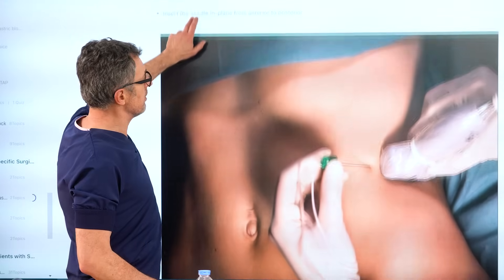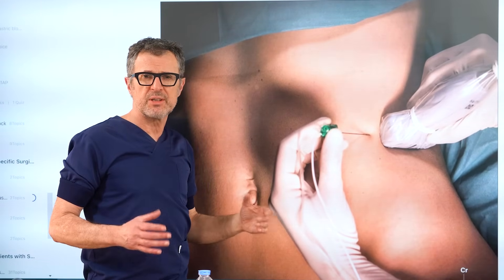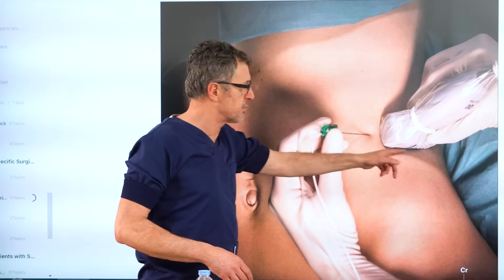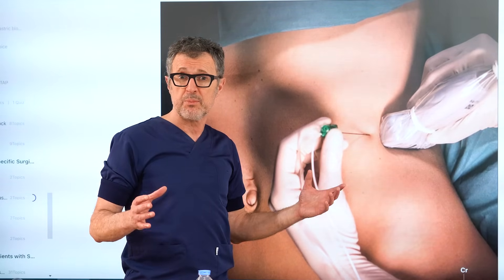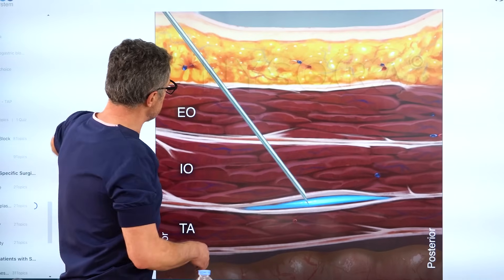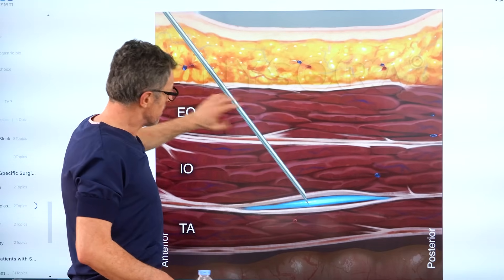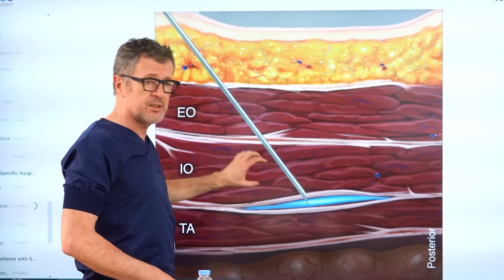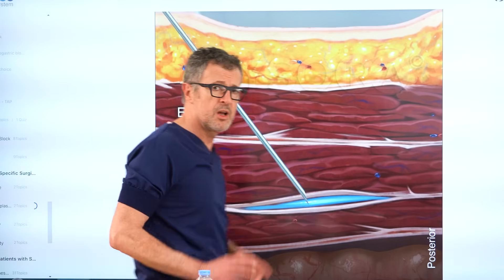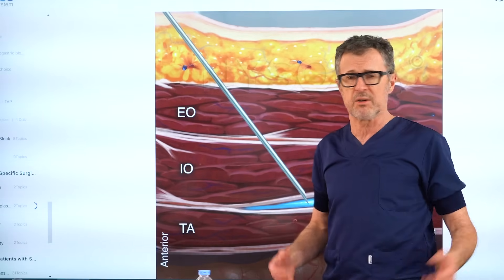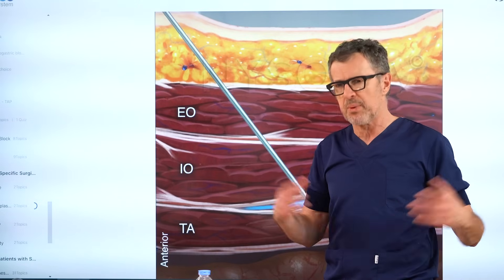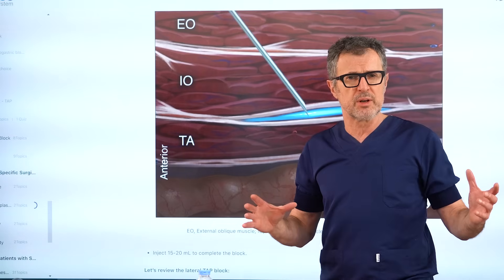For the lateral TAP block, the needle is introduced usually in-plane, but in larger patients it may be better to do this out-of-plane because the shorter path of the needle to the target between the transversus abdominus and internal oblique muscle has some advantages. The needle is inserted through the skin, subcutaneous tissue, external oblique muscle, and internal oblique muscle to place it between the fascias of the internal oblique and transversus abdominus muscles. Injection is 20 to 25 milliliters on one side for lateral incisions such as colostomy, colostomy reversals, and appendectomy.